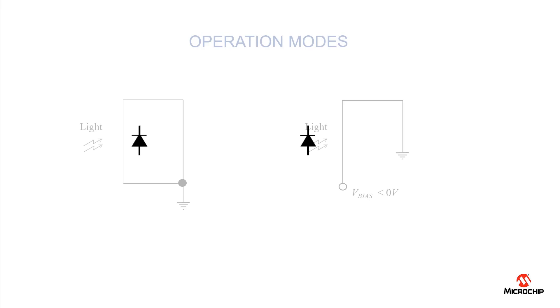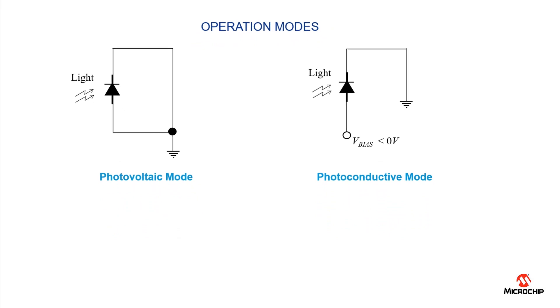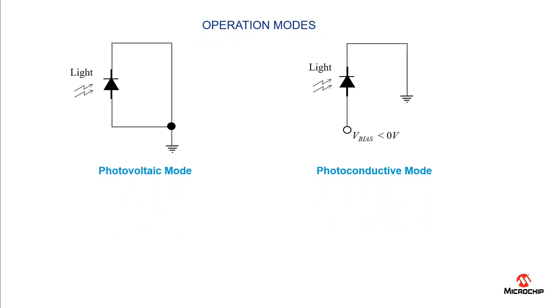There are two operation modes for the photodiode, the photovoltaic mode and the photoconductive mode. These two implementations have their own strengths and weaknesses and the mode selection is dependent on the target application.